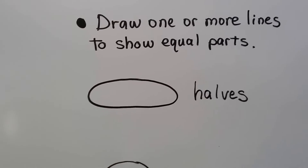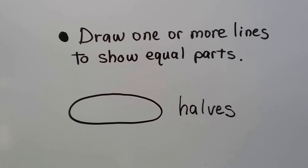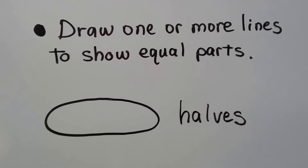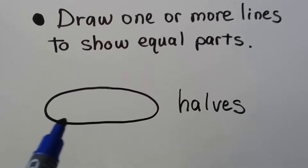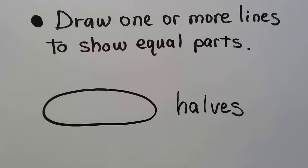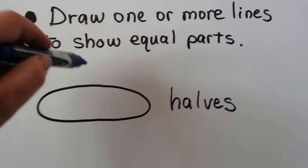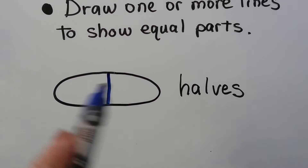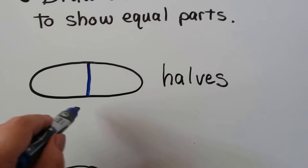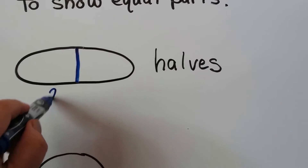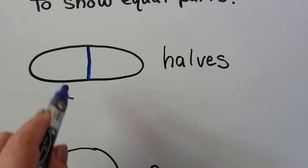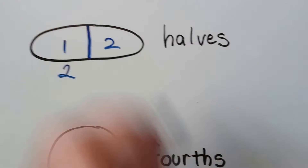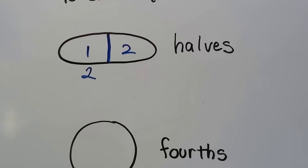Let's draw one or more lines to show equal parts. If we wanted halves, we could draw a line right here and now it's two halves — two equal parts: one, two.